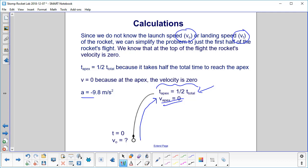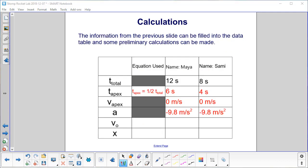And then we have a, the acceleration due to gravity, is negative 9.8 meters per second squared. We can now fill in some more information on our slide. Right here, the t_apex line. The equation is t_apex equals half of our total time. Here's where we had the total time, so we just cut those in half. And we get six seconds and four seconds. The velocity at the apex is going to be zero for all of our trials. Then the acceleration of the rocket, since it's in freefall once it takes off from the launcher, is negative 9.8 meters per second squared.